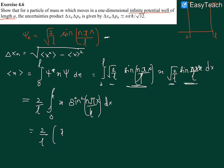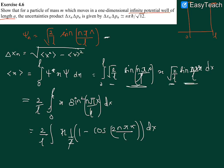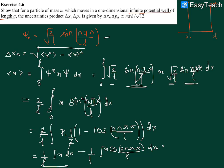We use the identity sine squared theta equals one-half times (1 minus cos 2 theta), so the integral becomes (1/L) times the integral from zero to L of x times (1 minus cos(2n pi x over L)) dx. Separating the integrands gives (1/L) times integral of x dx, minus (1/L) times integral of x cos(2n pi x over L) dx. The first term gives (1/L) times x squared over 2 from zero to L.